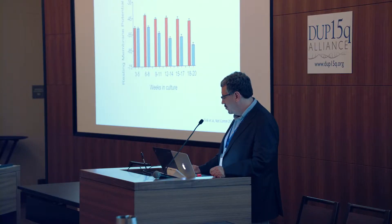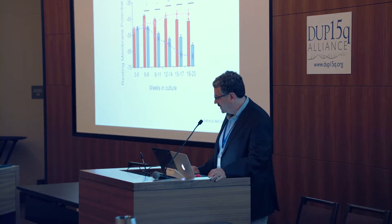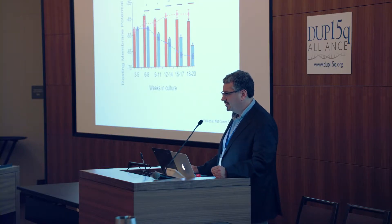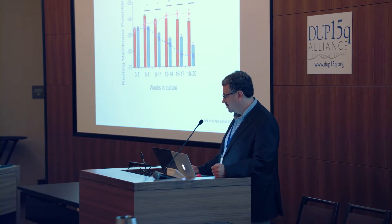As further validation that it's UBE3A specifically involved, we have a UBE3A knockout line generated by Carissa Sorois in Stormy's lab using CRISPR-Cas9 gene editing on one of the control lines. This gives us an isogenic pair of control versus UBE3A knockout, shown in the red dotted line. The UBE3A knockout mimics exactly what the neurons derived from Angelman patients show in terms of the lack of maturation of the resting membrane potential — which may relate to seizure susceptibility and other phenotypes.